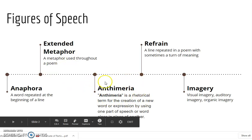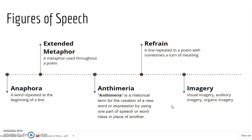Then we have the figure of speech called antimetria. Antimetria is a rhetorical term for the creation of a new word or expression by using one part of speech or word class in place of another. This was a favorite of Robert Frost. In his poem 'The Pasture,' he says, 'Come, let us clean the pasture spring.' The word 'pasture' normally functions as a noun, but in that phrase, it qualifies the word 'spring' and therefore functions as an adjective — a word generally functioning as a noun is transformed into another part of speech.